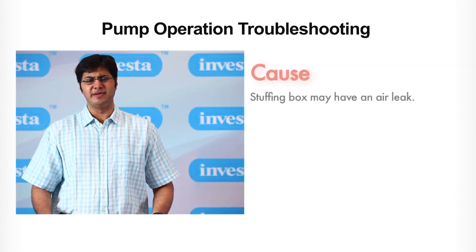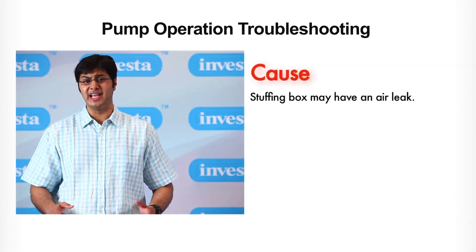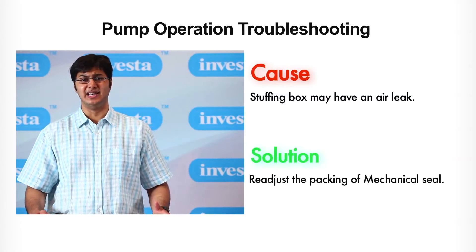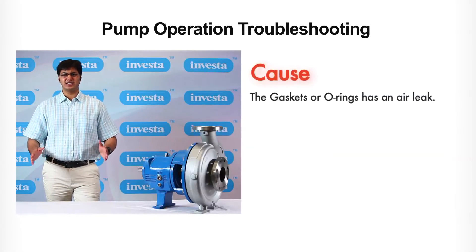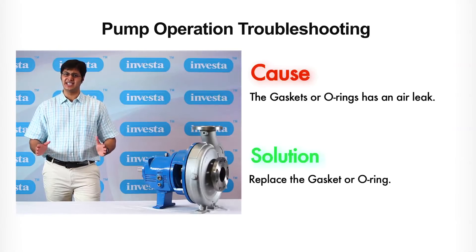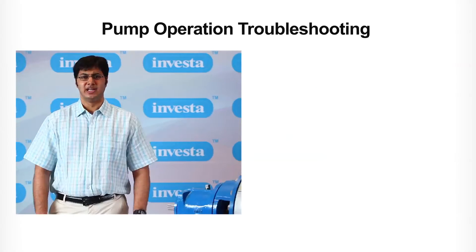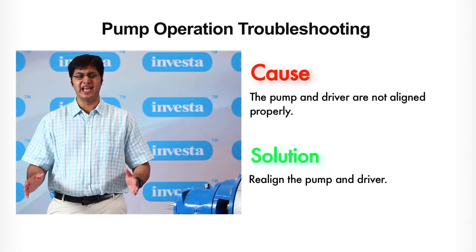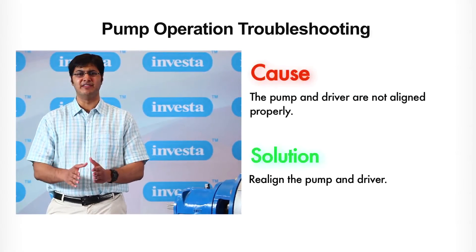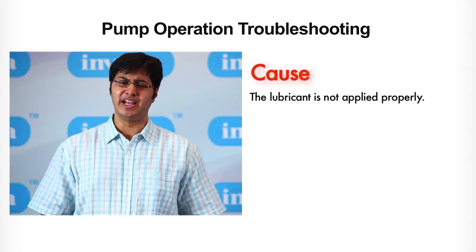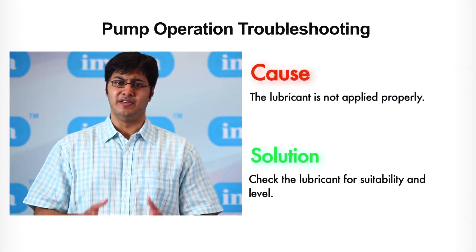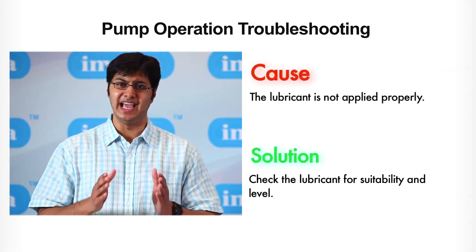Number six: the suction lift is too high — shorten the suction pipe. Number seven: stuffing box may have an air leak — re-adjust the packing of the mechanical seal. Number eight: the gaskets or o-rings may have an air leak — replace the gaskets or o-rings. Number nine: the pump and driver are not aligned properly — realign the pump and driver. Number ten: the lubricant is not applied properly — check the lubricant for suitability and level.